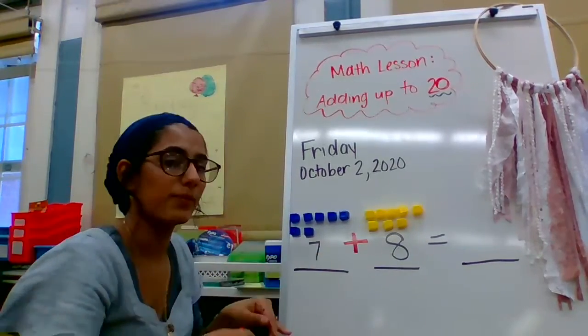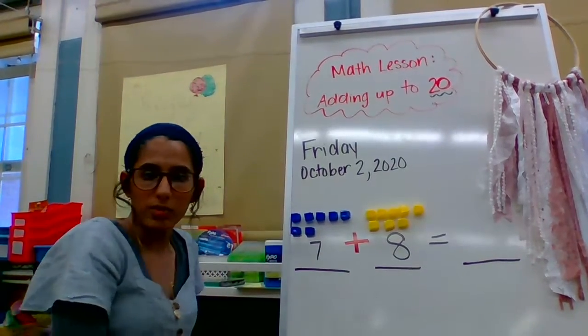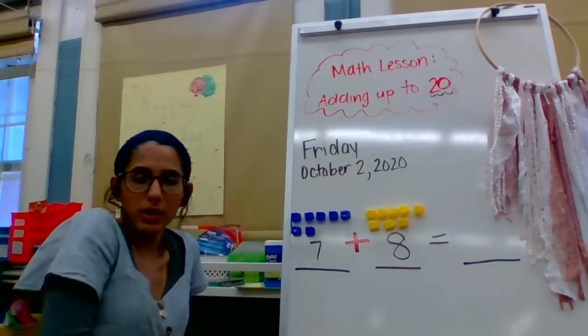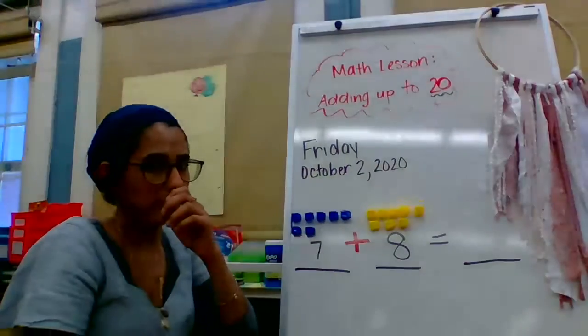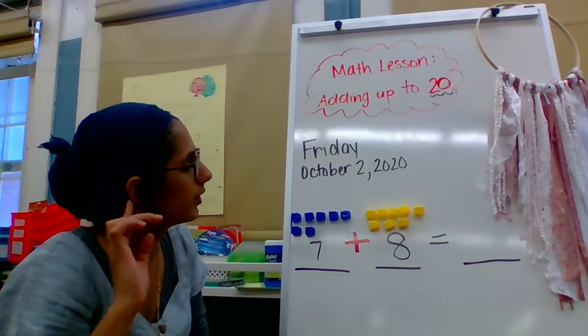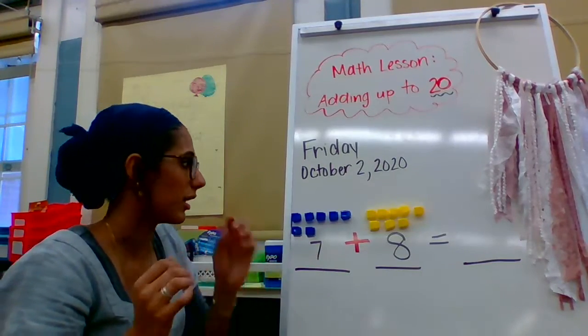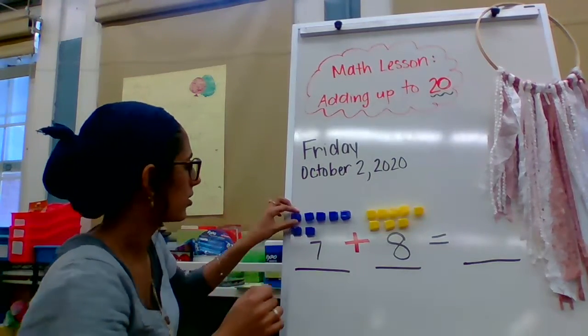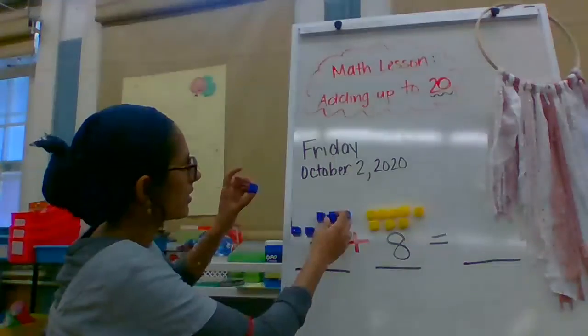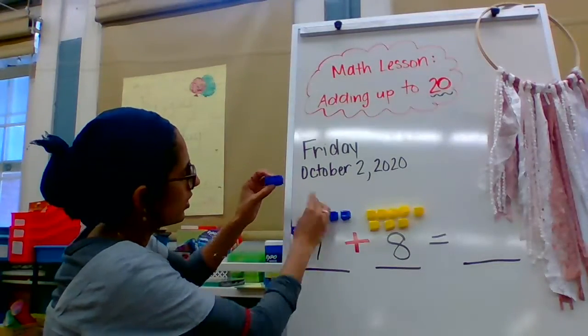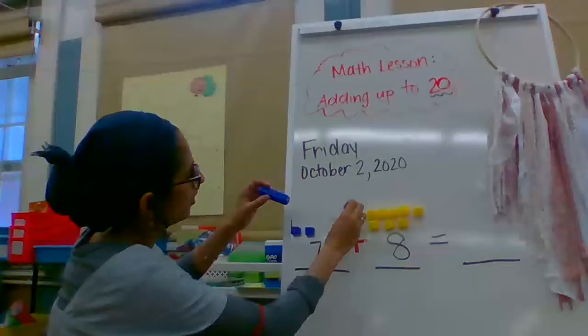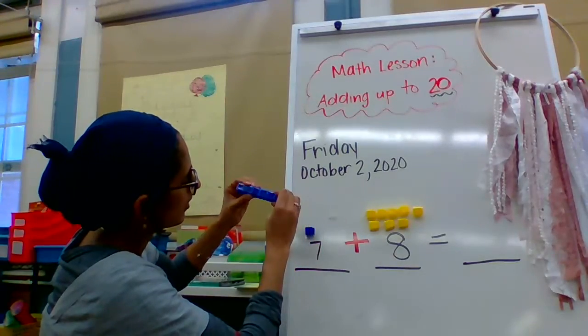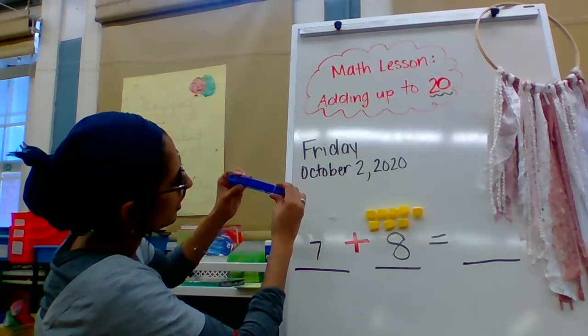Okay, so I have seven plus eight. What am I doing to those numbers? Am I dancing with them? No. What does the symbol mean? What do I have to do? I have to put it together. Nice job. So let's put that together. So here's my seven, right? Let's count together. One, two, three, four, five, six, seven.